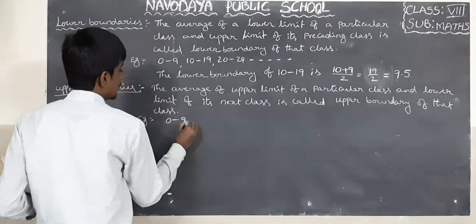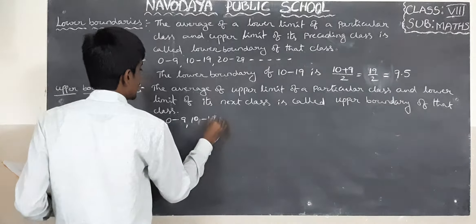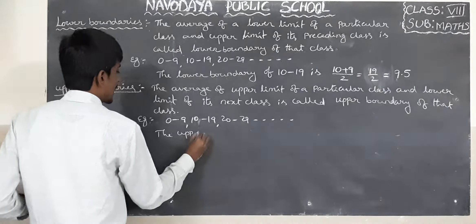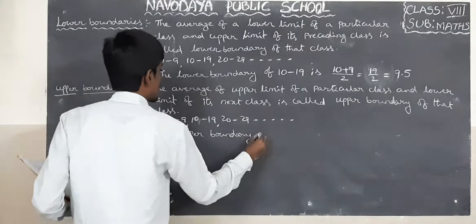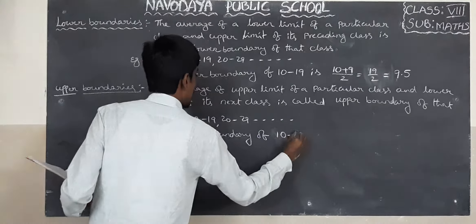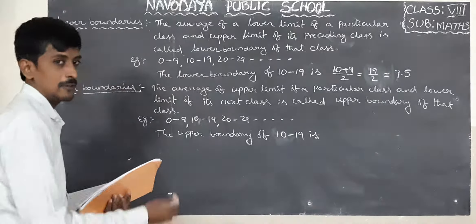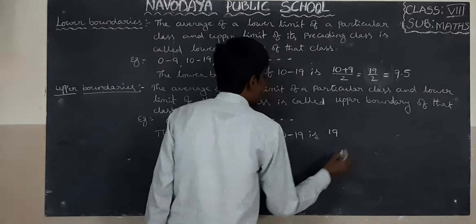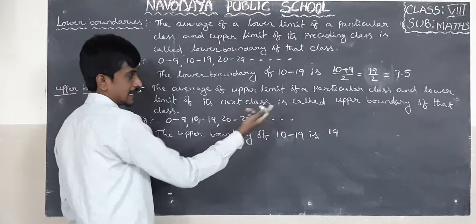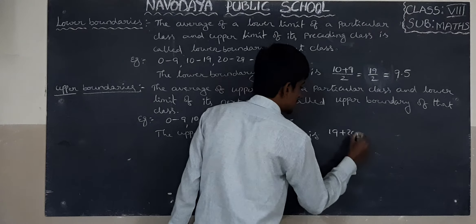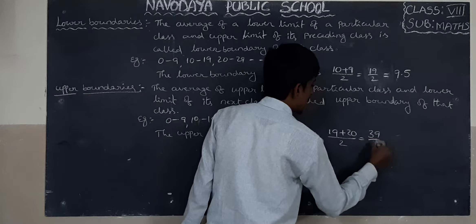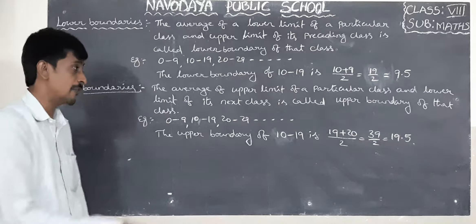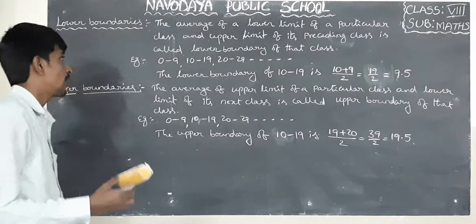For example, take the same classes: 0 to 9, 10 to 19, 20 to 29, and so on. The upper boundary of 10 to 19: the upper limit here is 19, and the lower limit of the next class is 20. So average means 19 plus 20 divided by 2 — that is 39 divided by 2 — equals 19.5. This is the upper boundary of that particular class.